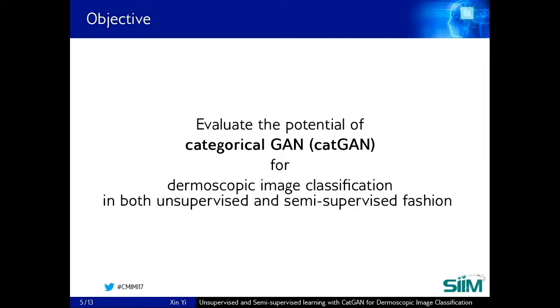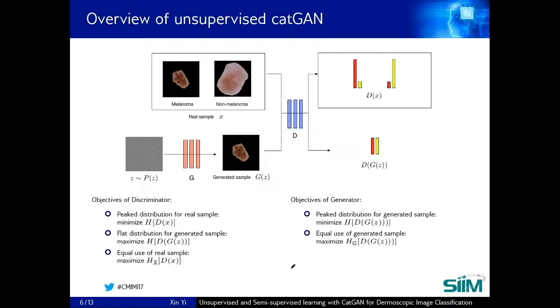This method was proposed by Jost Springenberg in 2015. So, how does CATGAN work? On this slide, I would like to give you an overview of the working principle of unsupervised CATGAN.